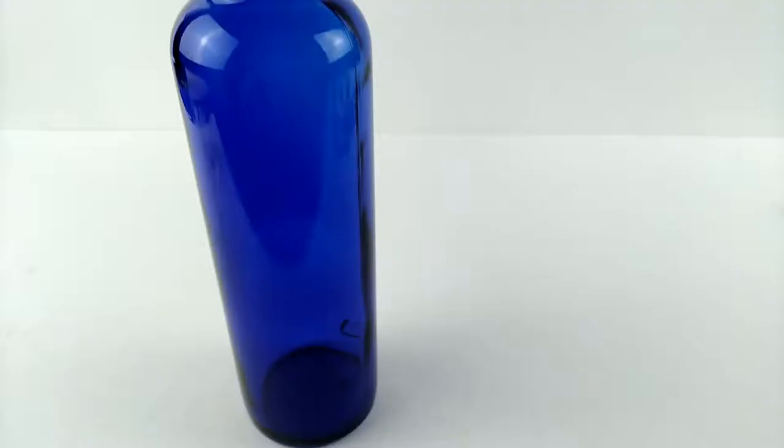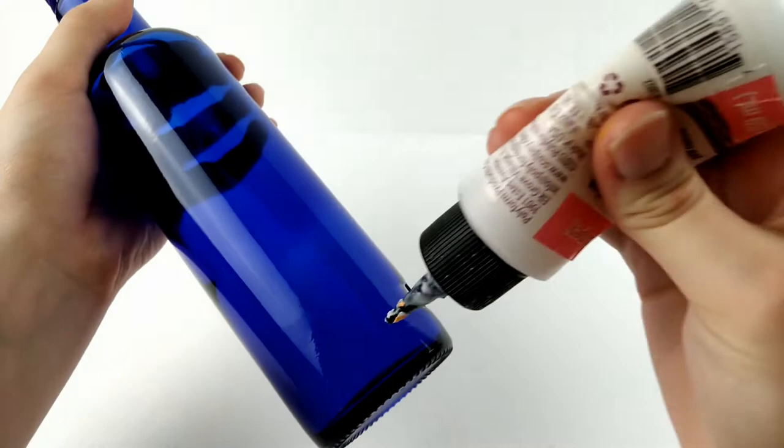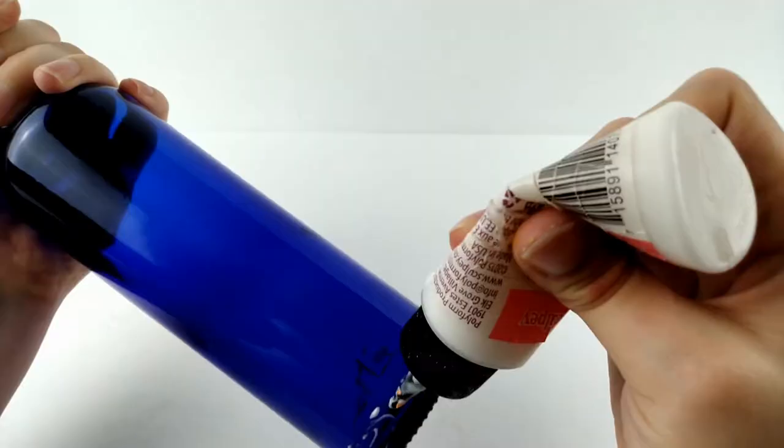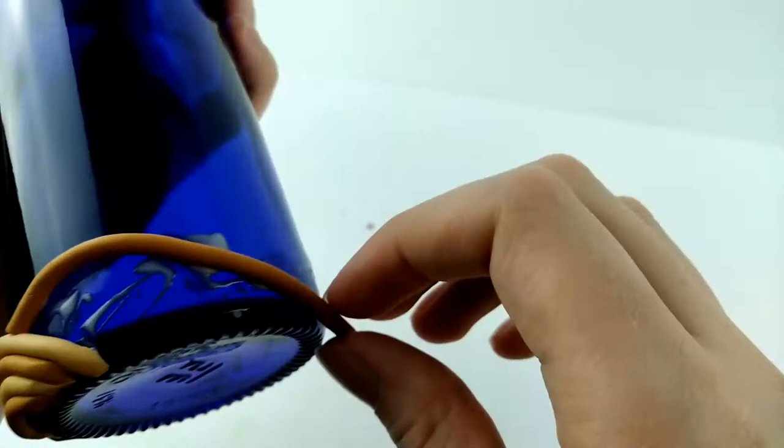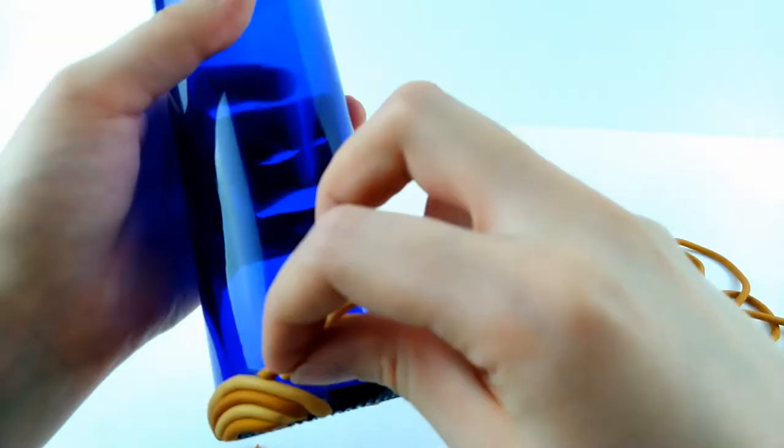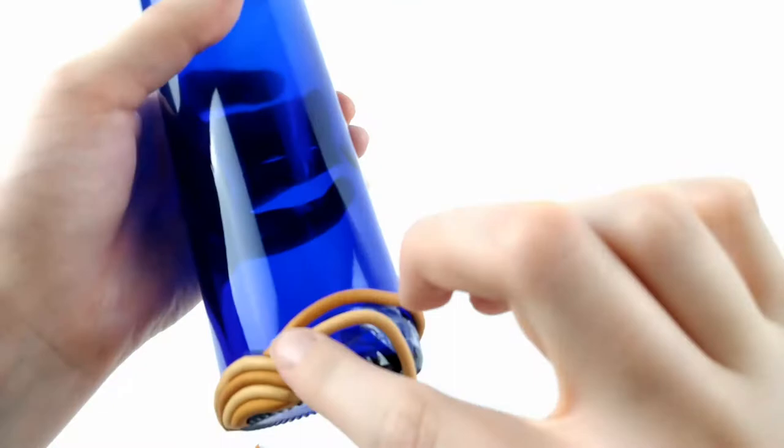Make sure to add some liquid Sculpey on the bottle wherever you're placing the clay, otherwise the clay won't stick to it. Once you have some logs rolled out, we're going to be placing them at the bottom in a curved shape, alternating light and dark. And I'm going to keep repeating this all the way around the bottle.